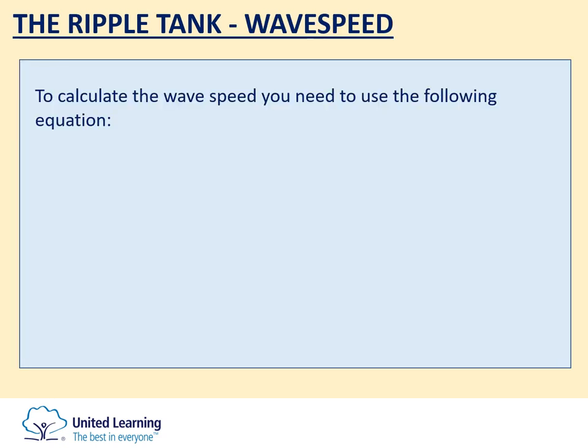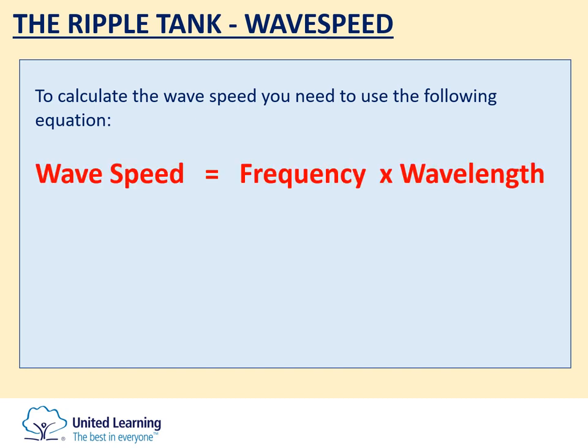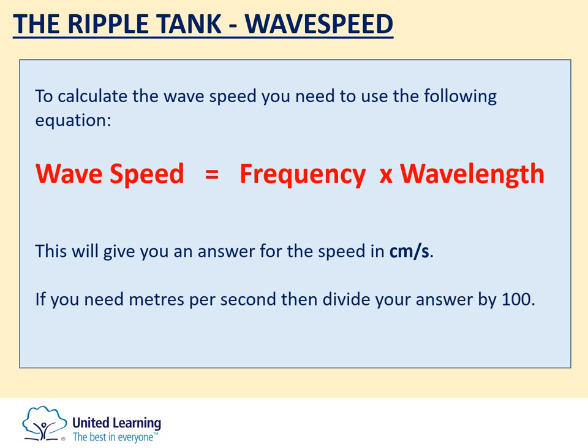You now have the two values needed to calculate your wave speed. The equation to use is: wave speed equals frequency times wavelength. Multiply your frequency and wavelength values together to get your wave speed in centimetres per second. If you want metres per second, or if the question asks for it, just divide your value by 100.